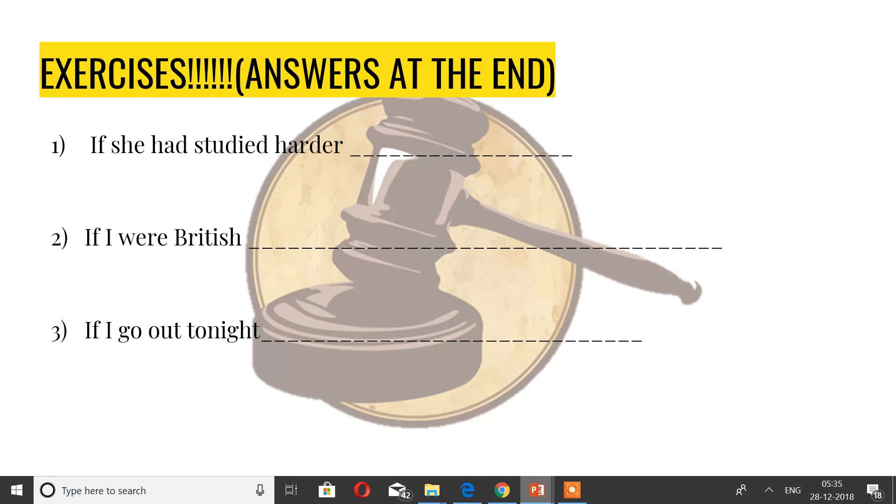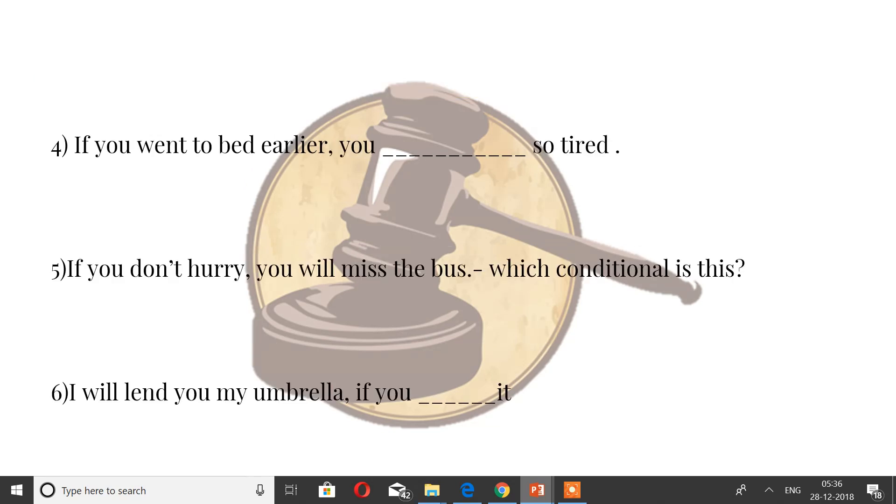These are some fun to do exercises, and answers are at the end. Just try, just fill with anything that comes in your mind. Make sure the tenses and the structure is right. If she had studied harder - remember, we just did it, it's the third conditional. Just write and check if the tense is right or not. Second question: if I were British. This is the second conditional, unreal past. And if I go out tonight, it's second conditional. Just remember the structure and fill it. Fourth question: if you went to bed earlier, you would - sorry, oh, I said the answer, I'm really sorry. Just pretend you haven't heard it.